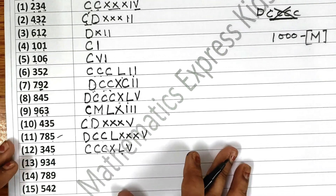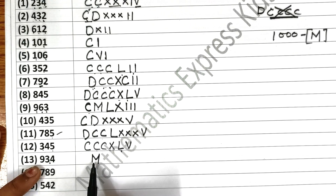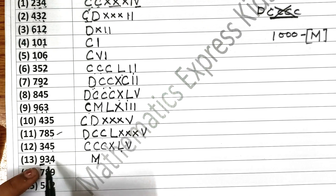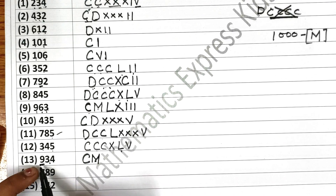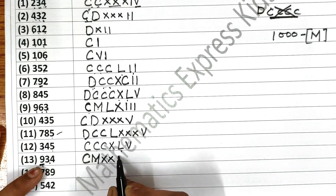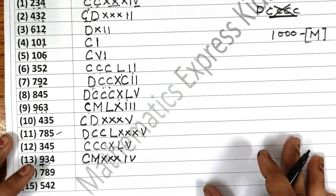Now see the next one, that is 934. Again for 900: as I told you, before writing 900 write 1000 first — 1000 is M, remember this. I need to write 900, so I will subtract 100 from 1000, giving CM. If you subtract 100 from 1000, you get 900. Now for 34: first write 30 as XXX, then write 4 — before writing 4, you must write 5 and subtract 1 from it, giving IV.